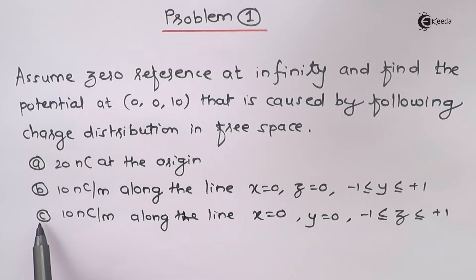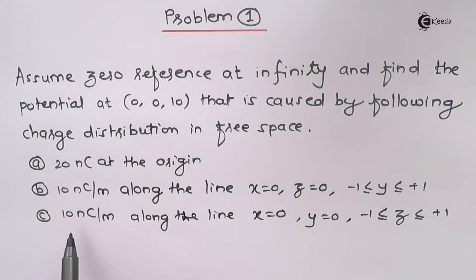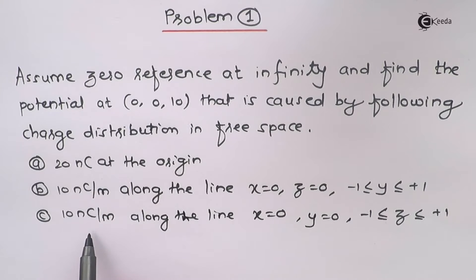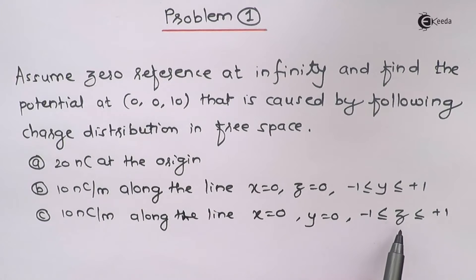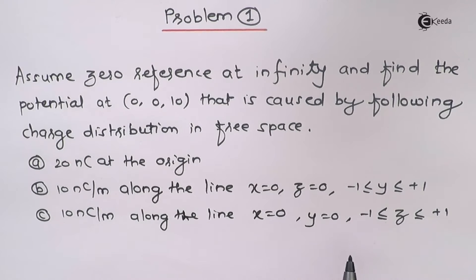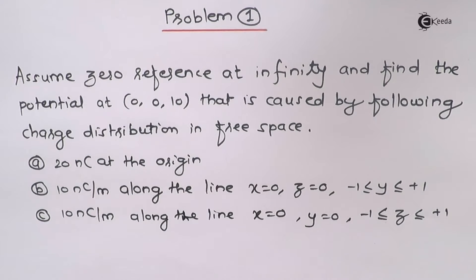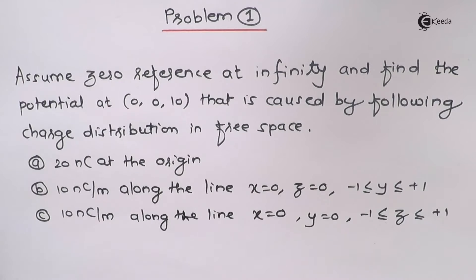Similarly, in part C there is line charge configuration with the same ρL value of 10 nanocoulombs per meter, along the line that is the intersection of x=0 and y=0 planes, for z values from minus one to plus one. Let us begin solving this problem.